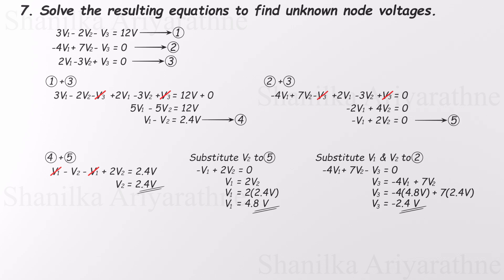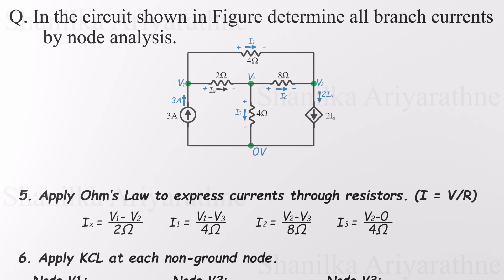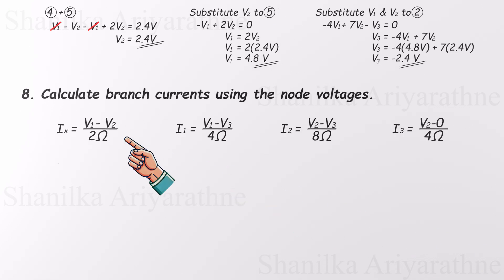Now that all the node voltages are known, we're ready to find the actual branch currents. All we have to do is plug the values of V1, V2, and V3 into the current equations we set up earlier. Let's do it. For IX, that's V1 minus V2 divided by 2. That's 4.8 minus 2.4 divided by 2, which gives us 1.2 amps.